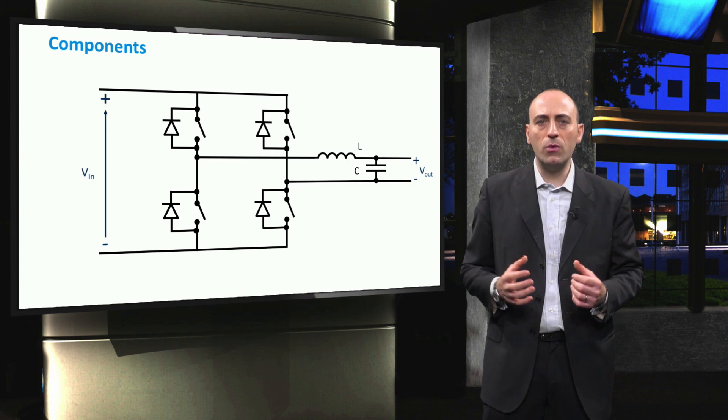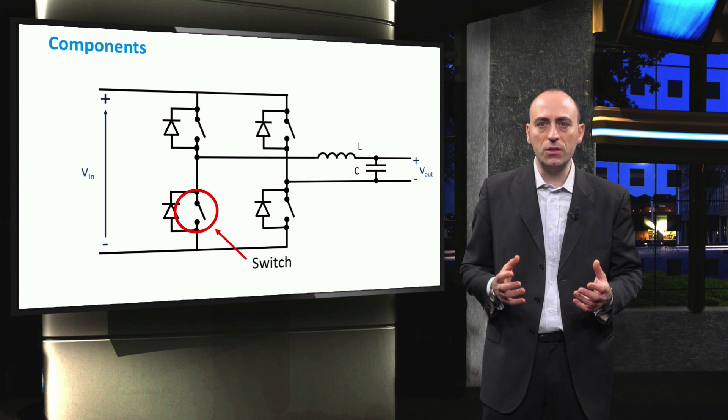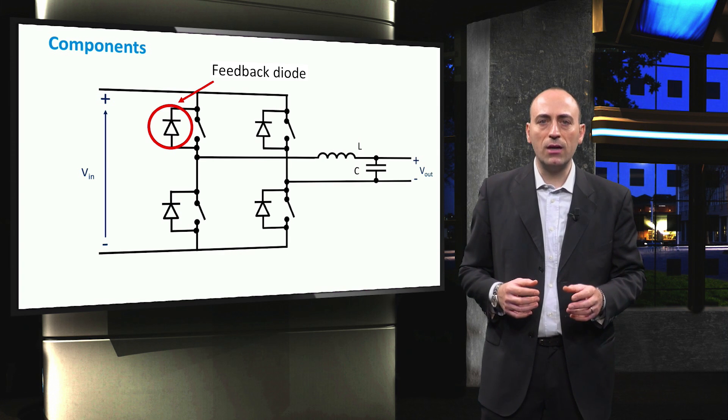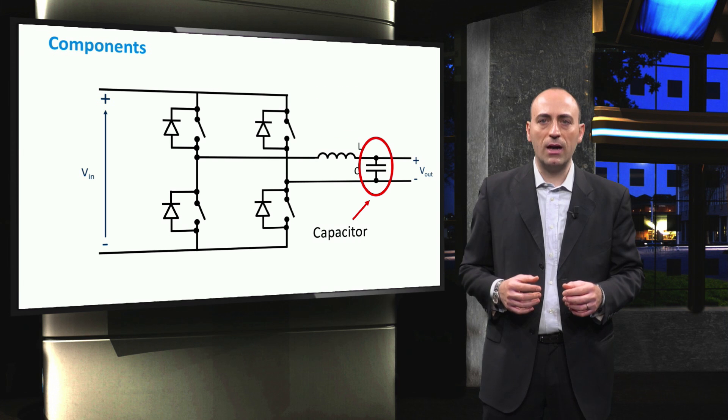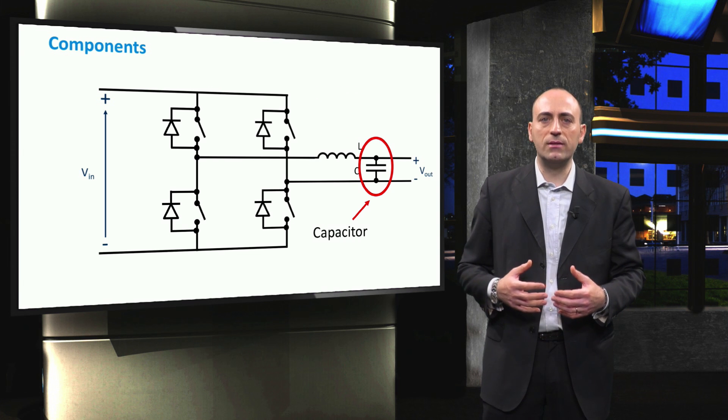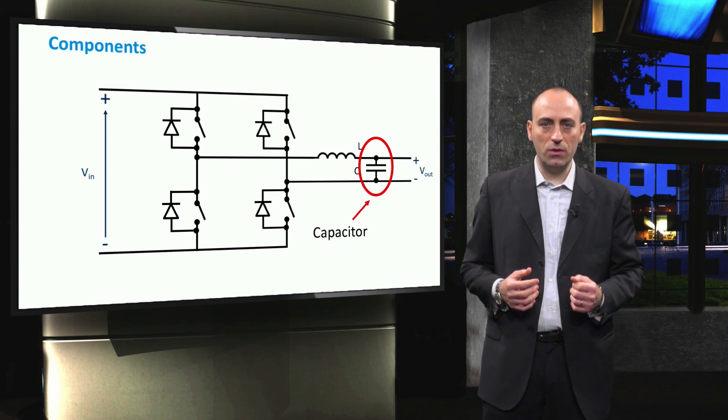Typically, the basic components of this converter are the switches, that can be IGBTs, MOSFETs or Thyristors, feedback diodes anti-parallel to the switches, inductor and capacitor that act as a filter at the inverter output. The anti-parallel diodes are included in the design in order to avoid that damage due to reverse overcurrent occurs on the switching devices.